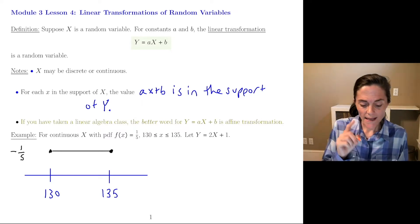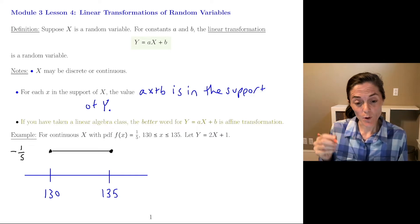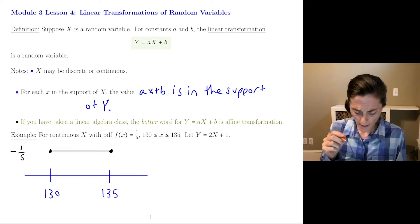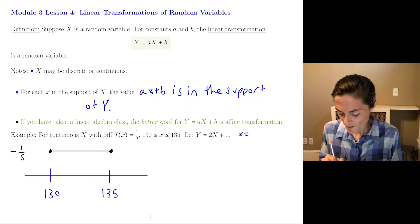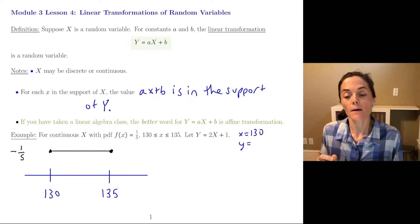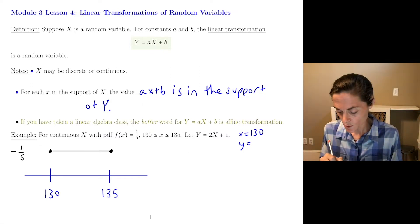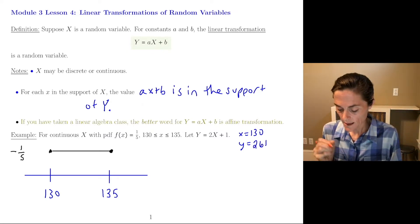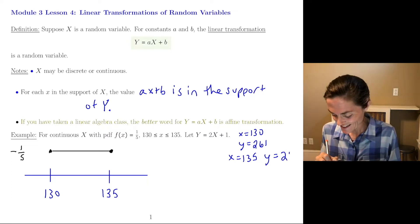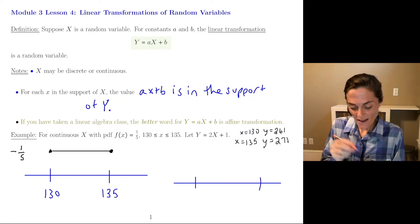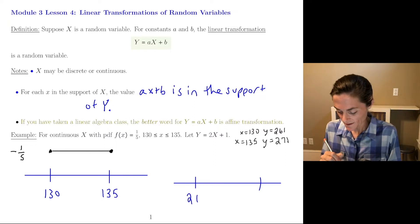What is the support of capital Y? Well, think about the endpoints here. When X is, I'll write it over here, 130, Y would be, well, it's 260 plus 1. And when X is 135, Y would be, well, 270 plus 1, 271. We go from 261 to 271.